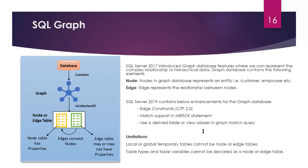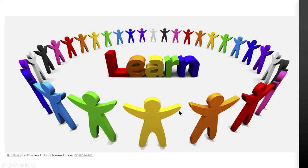Another limitation is that table types and table variables cannot be declared as node or edge tables. These are the current limitations of SQL Graph in SQL Server 2019.